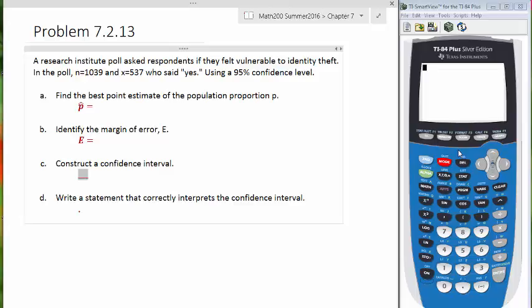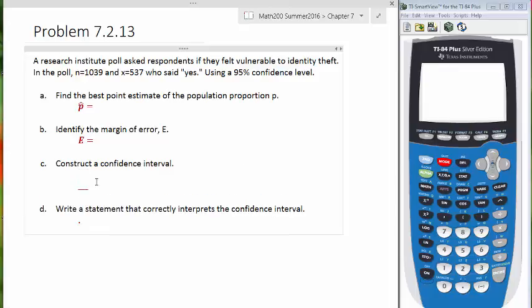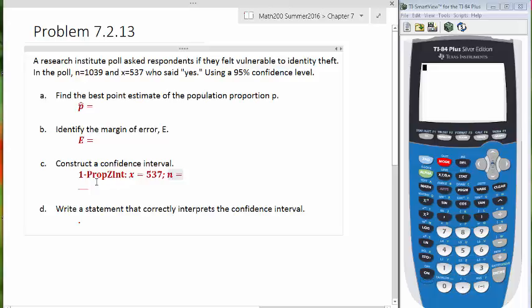Actually, the point estimate is fairly easy, but let's just punch this information into our calculator. The calculator command we're going to use is called 1-prop z-int. And with the 1-prop z-int, it's going to ask for an X value and an N value. So we'll identify that. Our X is 537 and our N is 1039. So let's go to our calculator.